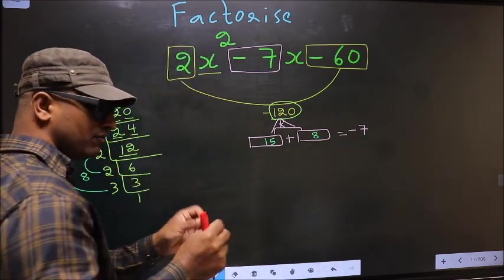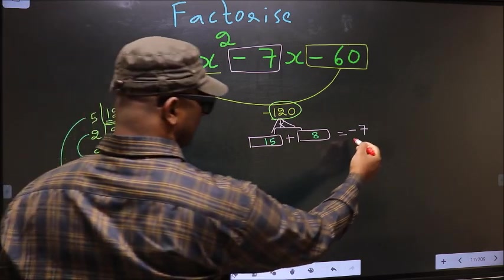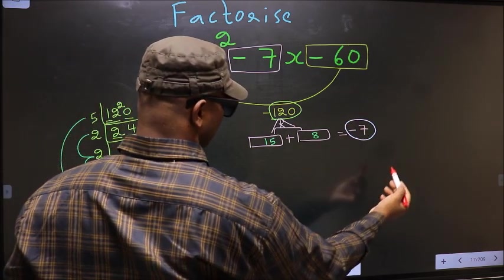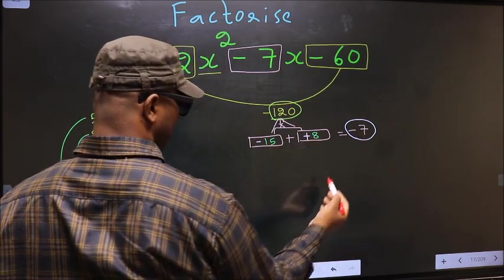Now we should adjust the signs. What I mean is, over here we have -7. To get -7, we should place negative here and plus here.